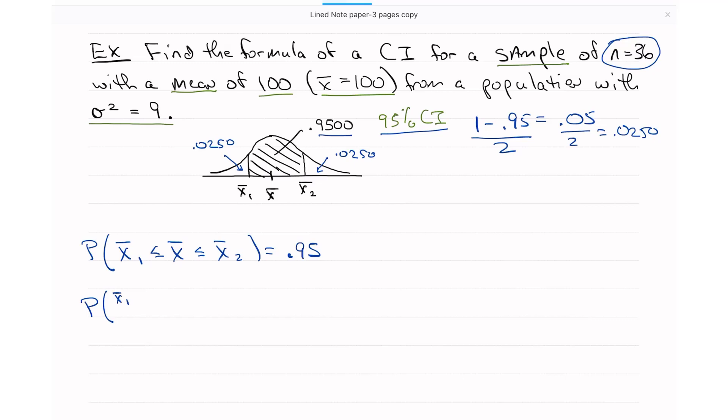I'm going to take x-bar 1 minus mu and divide by the standard deviation of x-bar, which is sigma over the square root of n. I have to do this on all three parts of this inequality. x-bar 2 minus mu over sigma over square root of n. I'm going to call this z1, and I'm going to call this z2. So what I end up with is z1, x-bar minus mu over sigma square root of n is between z1 and z2.